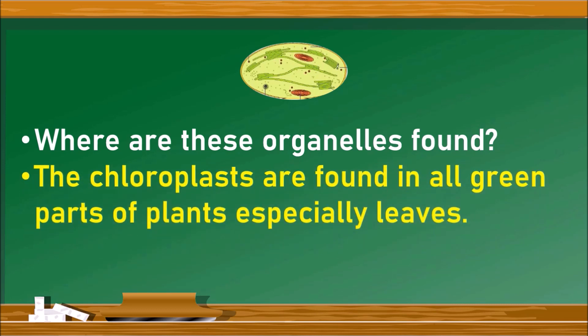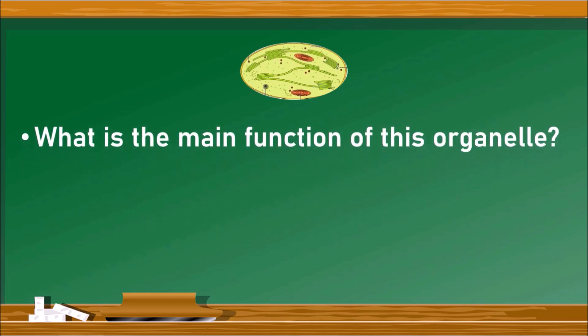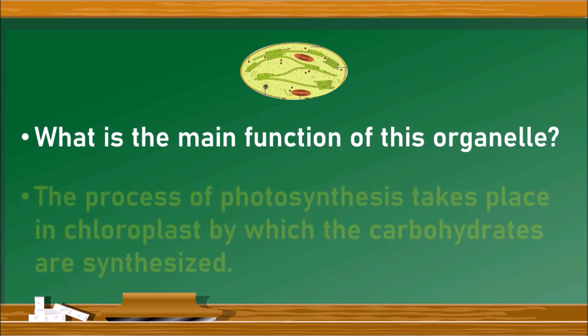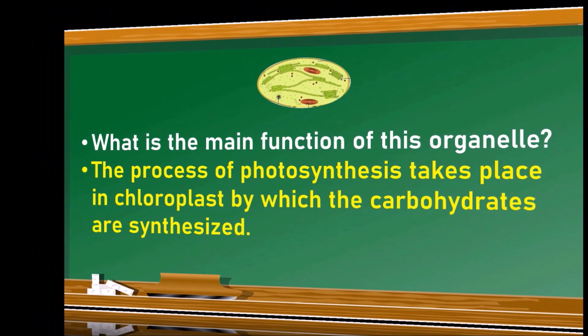The next question regarding chloroplast: where are these organelles found? These organelles are found in all green parts of the plants, especially the leaves. The next question is: what is the main function of this organelle? The process of photosynthesis takes place in the chloroplast, by which carbohydrates are synthesized.